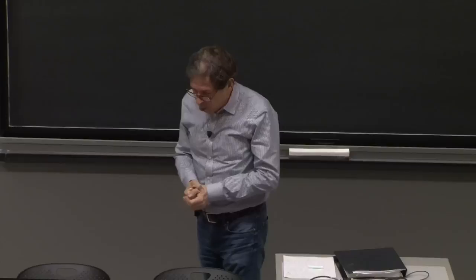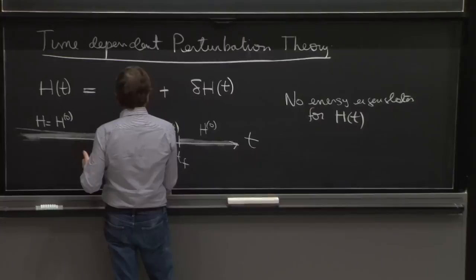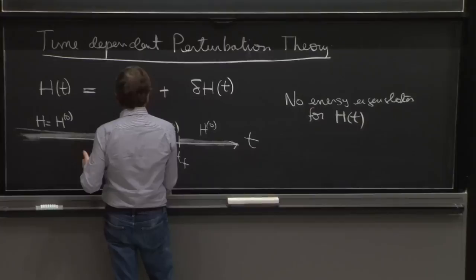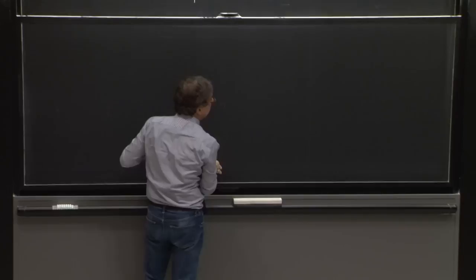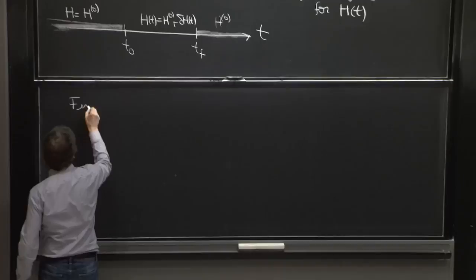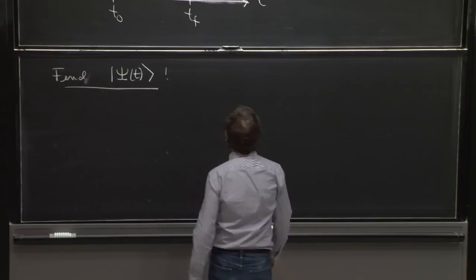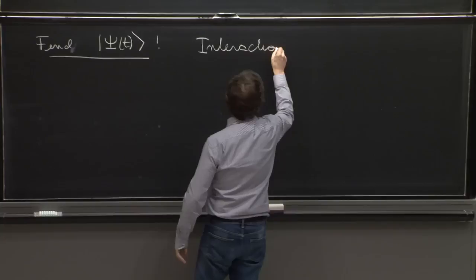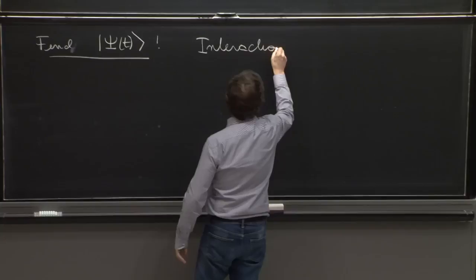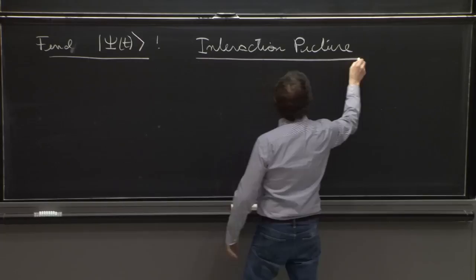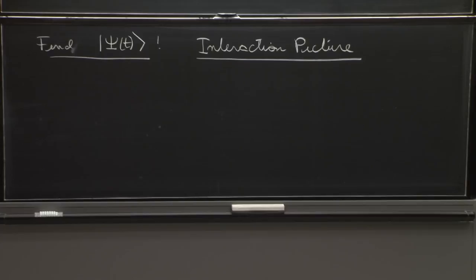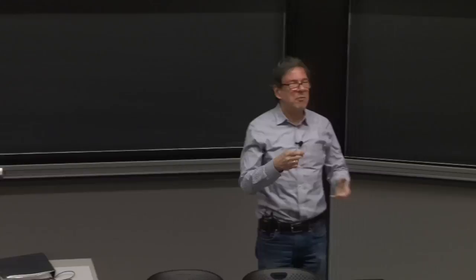Given that this is not a problem of finding energy eigenstates — the energy eigenstates of H0 are known — we want to find the wave function psi of t. That's our real unknown. To do that, we will use something called the interaction picture, just as we had the Heisenberg picture and the Schrödinger picture. It's not more complicated than anything you've seen — it's a very sensible way of doing things, combining good things from the Heisenberg picture and nice things from the Schrödinger picture together.